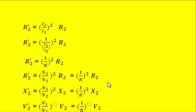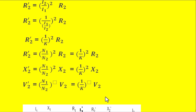Similarly, when the secondary winding leakage reactance X2 is transferred to the primary side, the reactive power must also be the same. So X2 dash equals (N1/N2) squared times X2, which is (1/K) squared times X2. Similarly, the secondary terminal voltage transferred to the primary side is V2 dash equals (N1/N2) times V2, which equals (1/K) times V2.